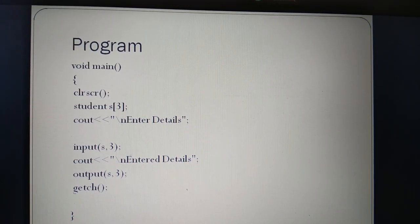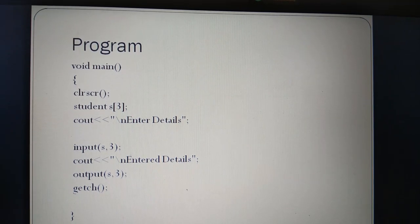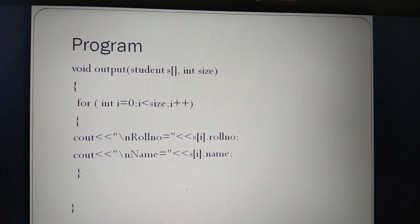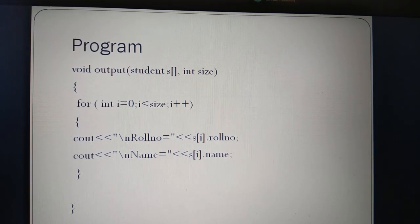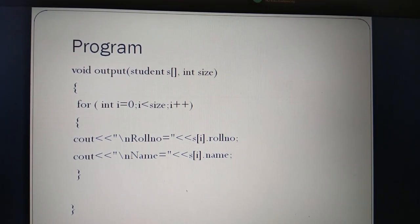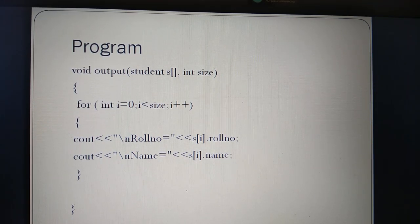After that, there is an output function which will be called. In the output function, you can see that the array of structure is passed along with the size of the array of structure. This output function will be called, and here again in the function definition the array of structure is declared and the next parameter is the size. Within the output function there is a for loop which will be executed till the condition is true. Since the size of the array is 3, it will be executed 3 times. It will display the value of the role number and name of each structure — structure 0, structure 1, and structure 2.